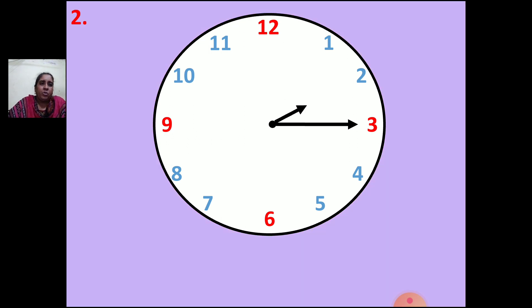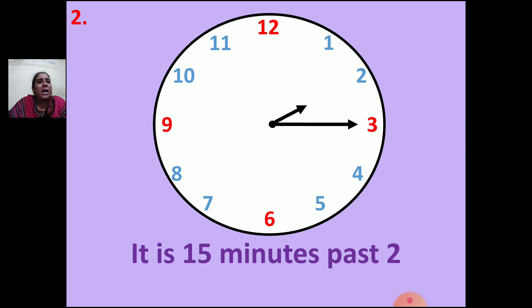Now the second clock. The hour hand is between 2 and 3, and the minute hand is pointing to 3. So how many minutes? 15 minutes. First write minutes, then hours: it is 15 minutes past 2. Or you can write it is a quarter past 2. These are the two ways.